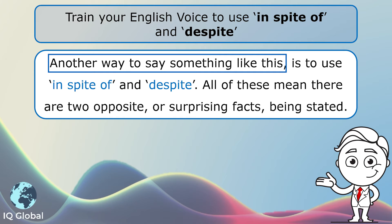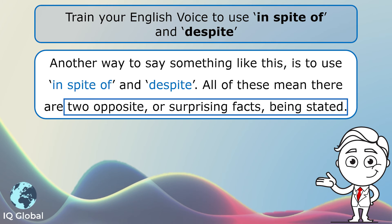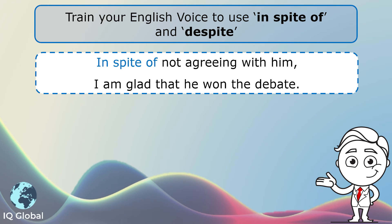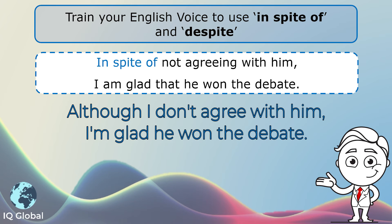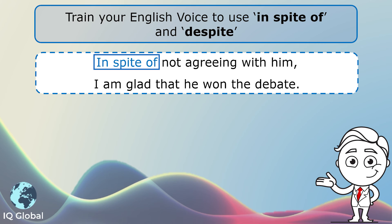Another way to say something like this is to use 'in spite of' and 'despite'. All of these mean there are two opposite or surprising facts being stated. So have a look at sentence example one: 'In spite of not agreeing with him, I am glad that he won the debate.' Here I have two facts, but it seems surprising that I'm glad he won, considering the fact that I don't agree with him. So I use 'in spite of' to show two facts that seem opposite and are surprising.